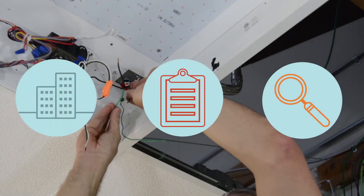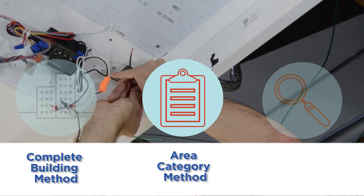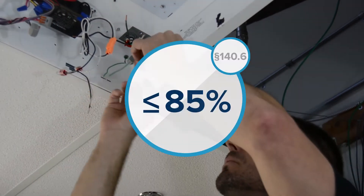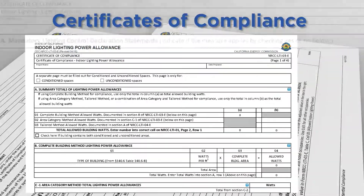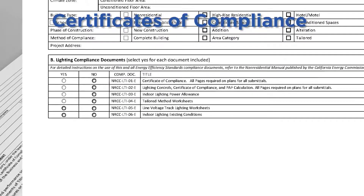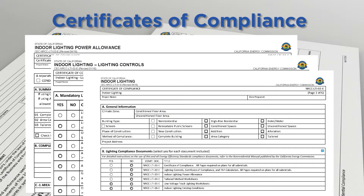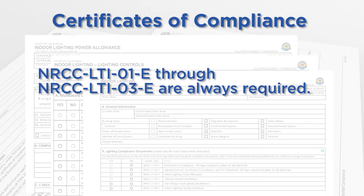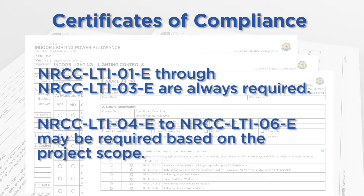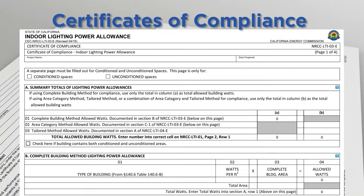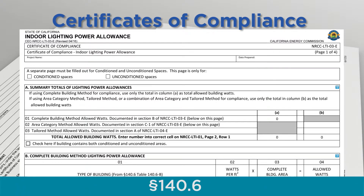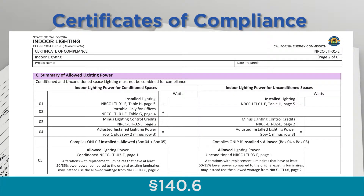For this compliance option, the lighting power allowance must be calculated using either the complete building method, area category method, or tailored method. The proposed retrofit must deliver a lighting power that is 85% or less than allowed under section 140.6. For these projects, fill out the applicable certificate of compliance forms LTI-01, LTI-02, and LTI-03. These forms document lighting power allowance, proposed lighting, and proposed controls. Forms LTI-04 through LTI-06 may also be required depending on the project scope. Use Table H on LTI-01 to record information on the replacement luminaires, newly installed luminaires, altered luminaires, and luminaires with component modifications. Use LTI-03 to determine lighting power allowance specified under section 140.6 and use Table C of LTI-01 to determine the 85% allowance.